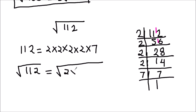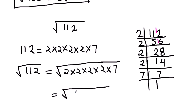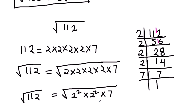So the square root of 112 is the square root of 2 times 2 times 2 times 2 times 7. In exponent form, we can write it as 2 squared times 2 squared times 7. We write it in terms of 2 squared instead of 2 raised to the power 4, because the number is under the square root sign and it will be easier to cancel out the square root sign with the squared number.